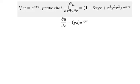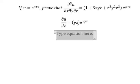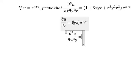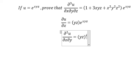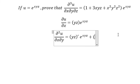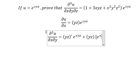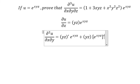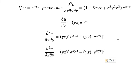Next we do the first derivative of u with respect to y. We apply the product rule of differentiation: first derivative of yz multiplied by e to the power of xyz. Because we differentiate with respect to y, y is the variable and x and z are just like numbers.